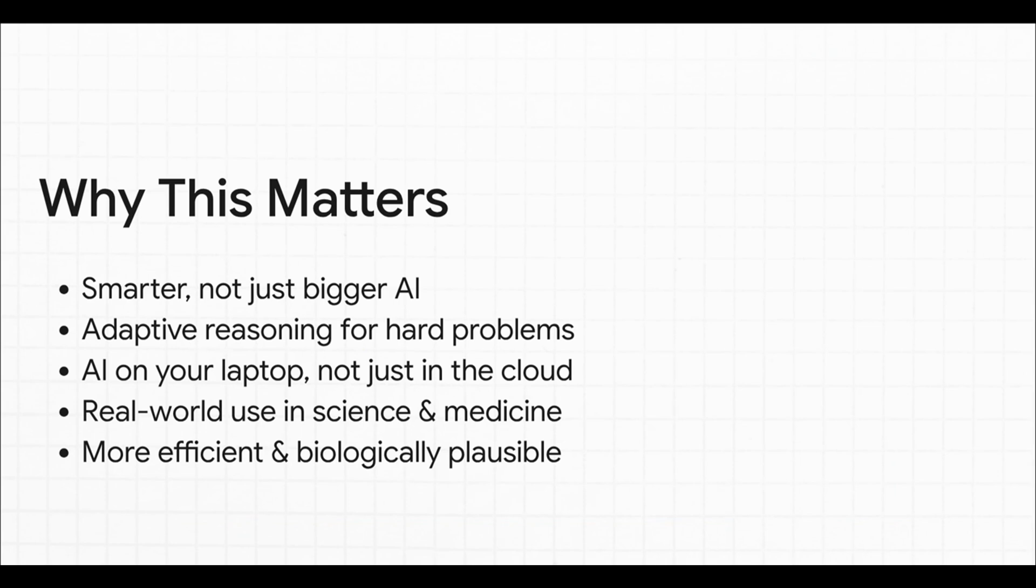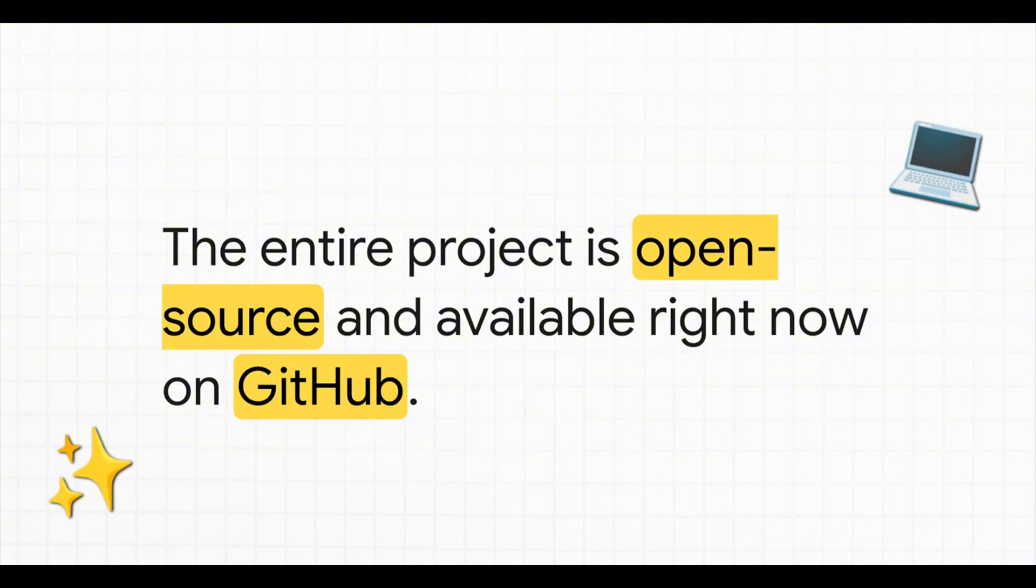So, let's break down why this is such a potential game changer. It means we could have AI that's smarter, not just bigger. We're talking about adaptive reasoning that can tackle really, really hard problems. And because it's so efficient, it could mean having powerful AI running right on your laptop, not just in the cloud. Think of the new applications in science, in medicine. It's huge. And maybe the best part, especially for all you builders and curious minds out there,